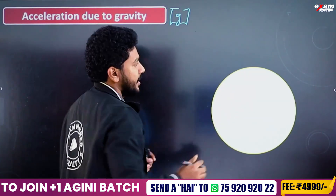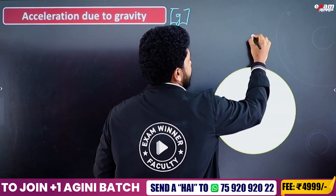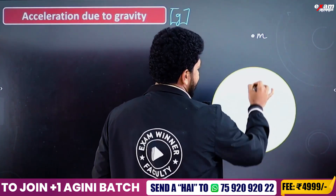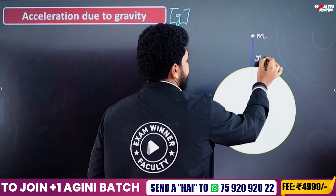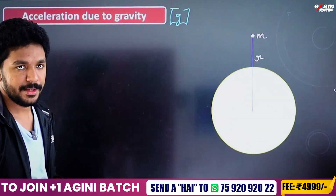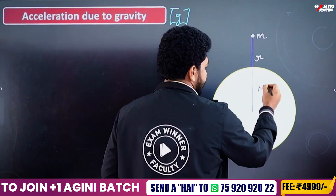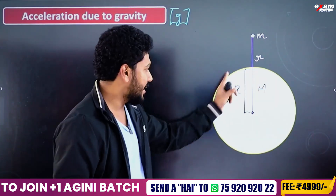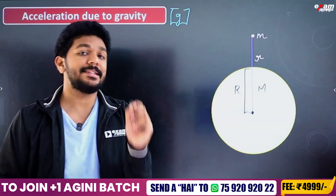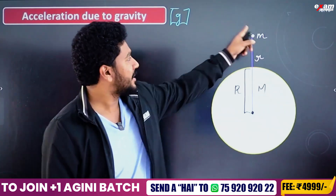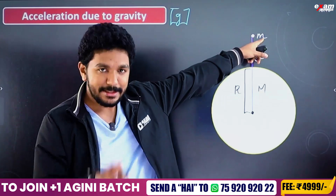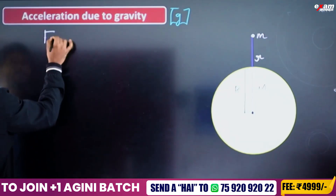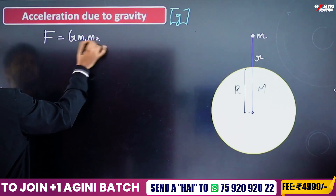Let's derive it from the Earth. Consider the Earth here. The Earth has mass capital M, and this is the radius of the Earth. The distance from the center of the Earth to a point on the surface is the radius R. From the universal law of gravitation, F is equal to capital G times the mass of the Earth, divided by the distance squared.